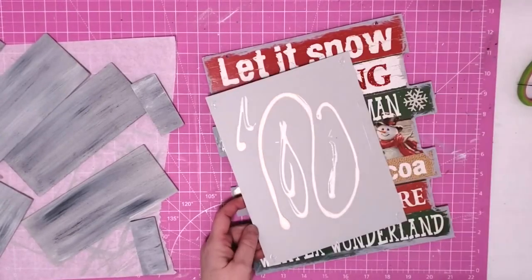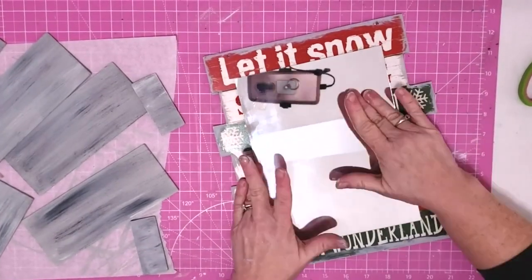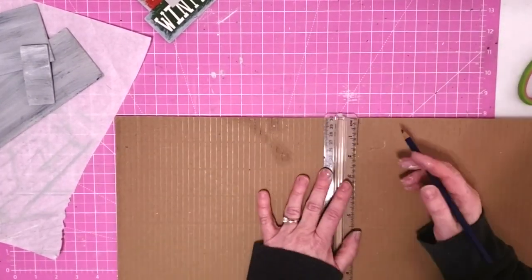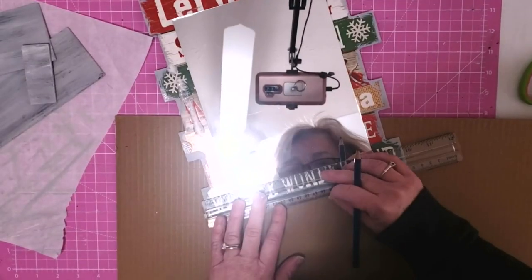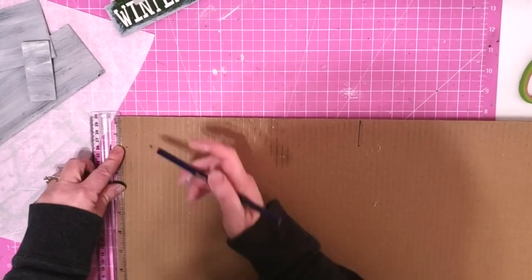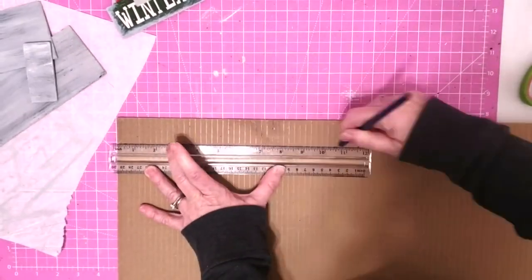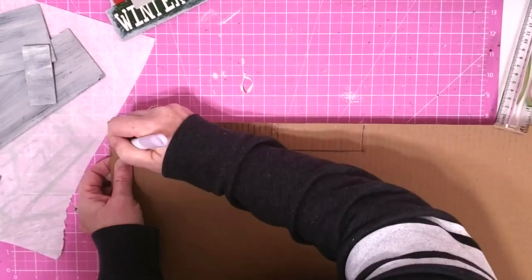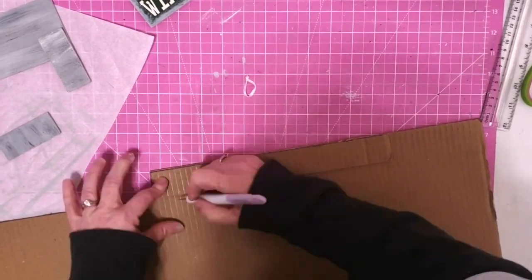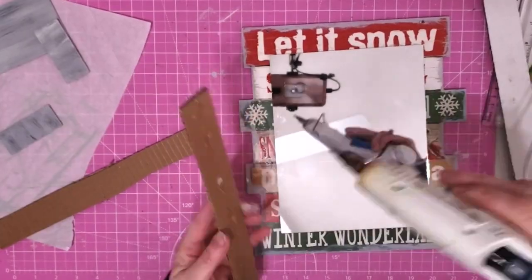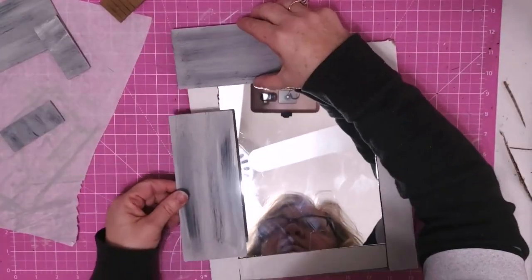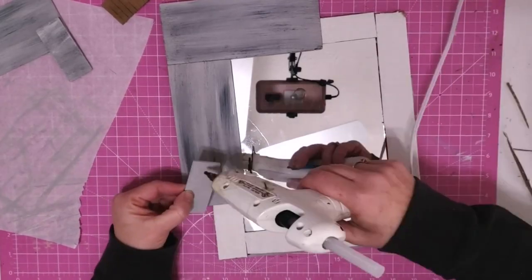Now we're going to attach our mirror to our sign using a little bit of hot glue and some wood glue. When I put that mirror down on that sign, I realized that there was going to be a gap between the mirror and the sign and my wood planks were not going to lay on there correctly. So I grabbed this project board from the Dollar Tree and I measured out the pieces to fit around that mirror and then I cut them out with my utility knife. Now we're just going to glue them down around our mirror using some hot glue and that fixes that gap. We can take our wood pieces and glue those down.